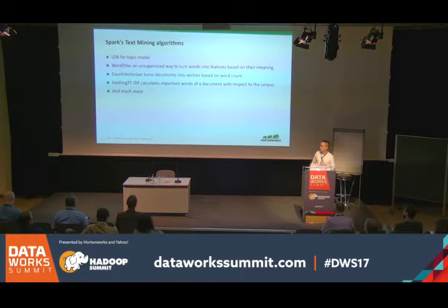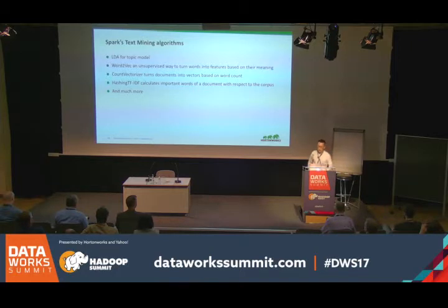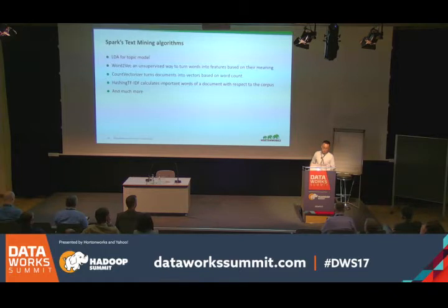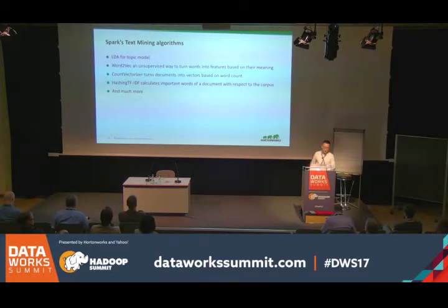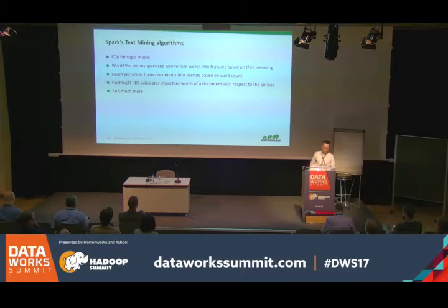MLlib provides very important built-in components for text mining pipelines. These include LDA models for topic modeling, Word2Vec which is an unsupervised way to convert words into features based on their meanings, CountVectorizer and HashingTF which convert words into double-type features in slightly different ways — CountVectorizer is based on word count while HashingTF uses hash values — and TF-IDF, which calculates the importance of words with respect to the whole corpus.